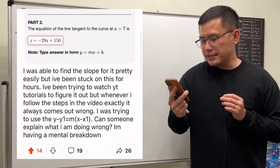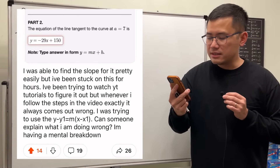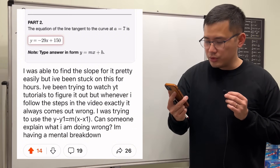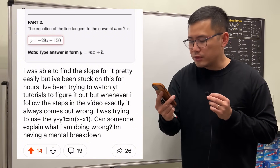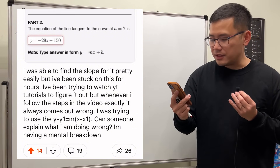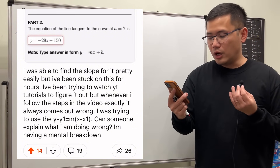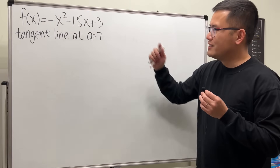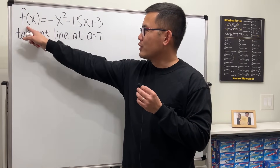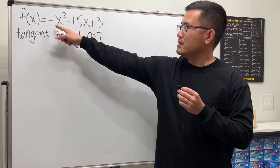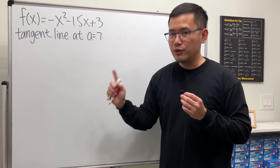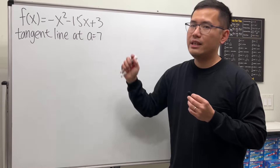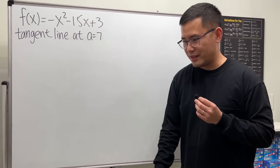I was able to find the slope pretty easily, but I've been stuck on this for hours. I've been trying to watch YouTube tutorials to figure it out, but whenever I follow the steps in the video it always comes out wrong. Well, let me help you with this. We are given function f(x) and we are trying to find the equation of the tangent line at a = 7.